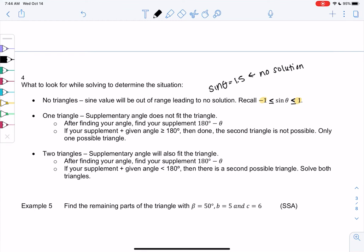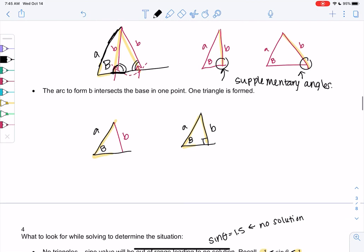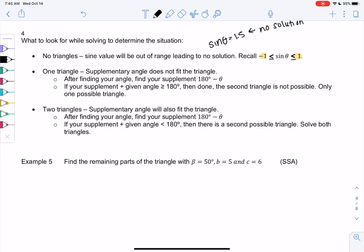So what we're going to do is we're going to find the supplementary angle. The reason it's the supplementary angle is these two angles are supplementary, because this is the same angle. Supplementary means they add up to 180. So if it does form two triangles, the two triangles have supplementary angles. So if the supplementary angle ends up working, then we know there's a second possibility. So what we're going to do is we'll find the supplementary for either case. And then the difference is, is if your supplementary angle plus the given angle is greater than 180, then it's not possible to make a second triangle, because that would be too big, right? More than 180 degrees. And then you're done. But if your supplement angle and your given angle is less than 180, then the second triangle is possible and you have to solve both.